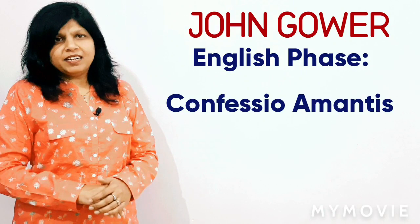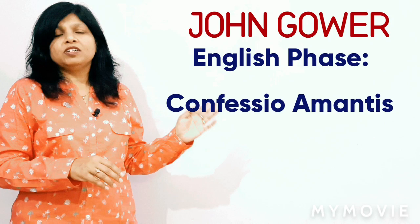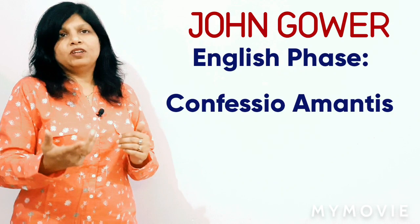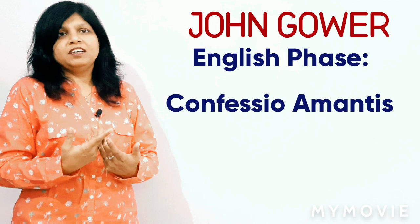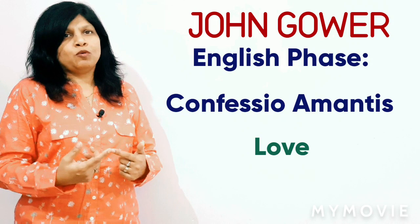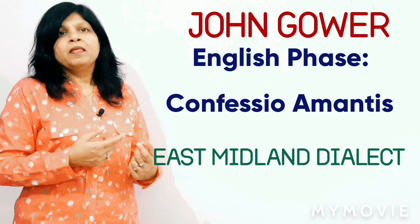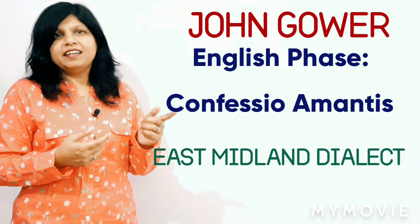Moving on to the English phase, the third work John Gower wrote is Confessio Amantis. In his earlier works he was a didactic poet writing in a moral vein, but in this English phase he realized he alone cannot set the world right, so he decided to write about love. The idea for Confessio Amantis was given to him by King Richard II. It was written in the East Midland dialect — the same dialect in which Chaucer's Canterbury Tales was written.